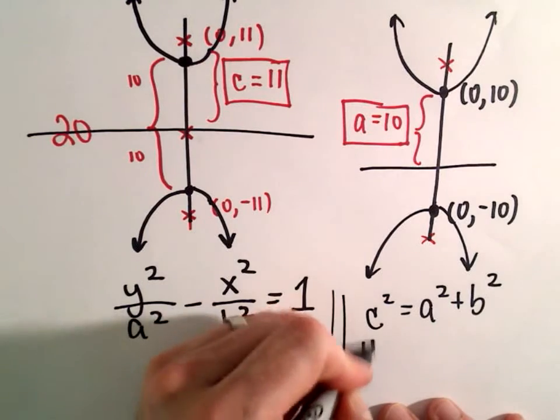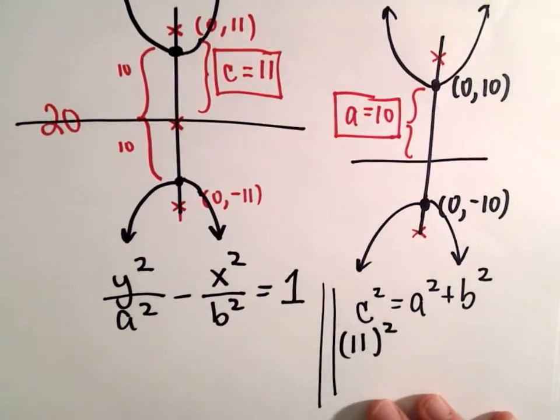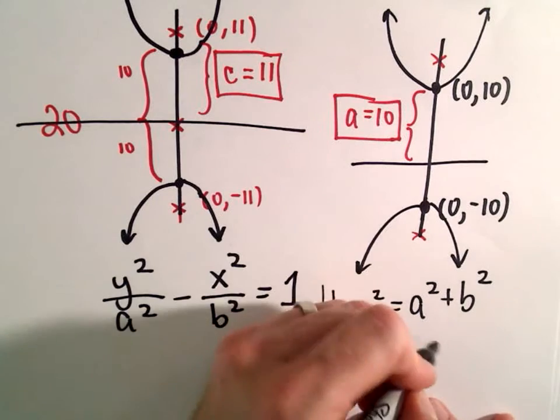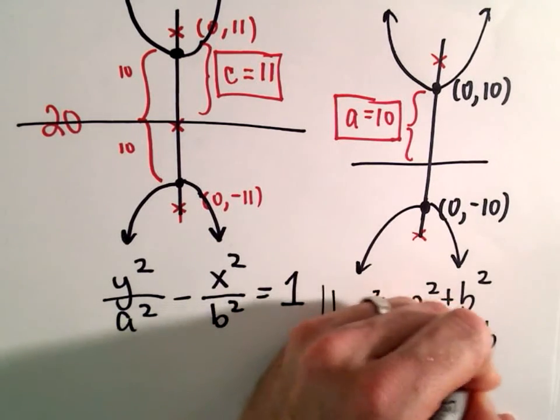So c is going to be 11. So we'll have 11² = a, which we said is 10, squared plus b².